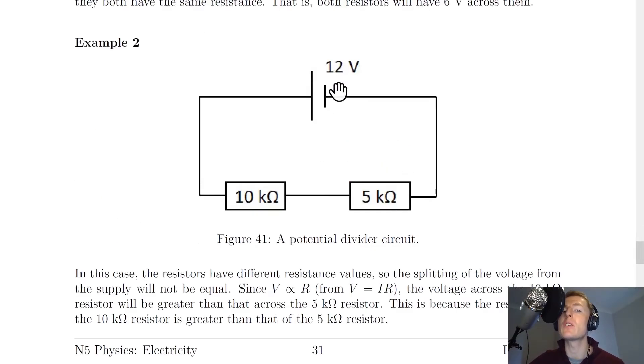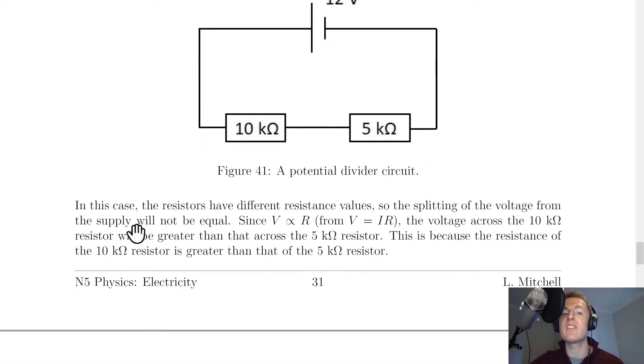In the second example, however, we've got a 12 volt battery, and this time we've got a 10 kilo ohm resistor and a 5 kilo ohm resistor. In this case, the resistors have different resistance values, so the splitting of the voltage from the supply will not be equal. Since V is proportional to R, voltage is directly proportional to resistance from the equation V equals IR. Remember, this just means as the resistance goes up, the voltage goes up, and vice versa. Then the voltage across the 10 kilo ohm resistor will be greater than that across the 5 kilo ohm resistor.